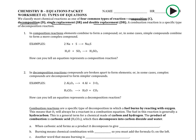A composition reaction is basically where you have two simple things combining to form something more complex. If you look at the examples and look for patterns, both of them start off with two things and combine into one thing. In the second one, two different things are combining into one thing.